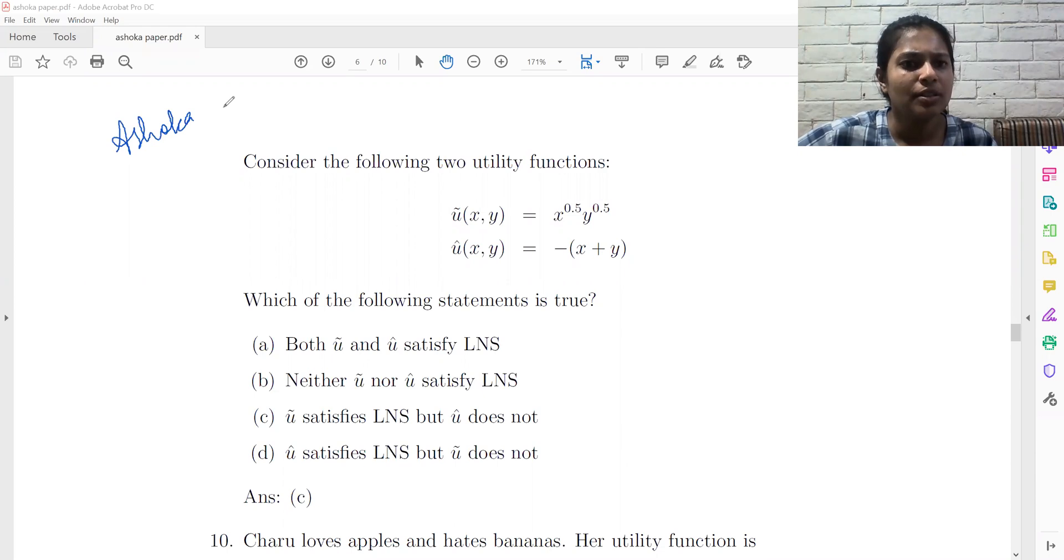Ashokar University sample paper question 9. I have to prove which of the utility functions satisfy local non-satiation. So local non-satiation means that if you increase the utility of either good, if you increase the quantity of either good, the utility should go up.